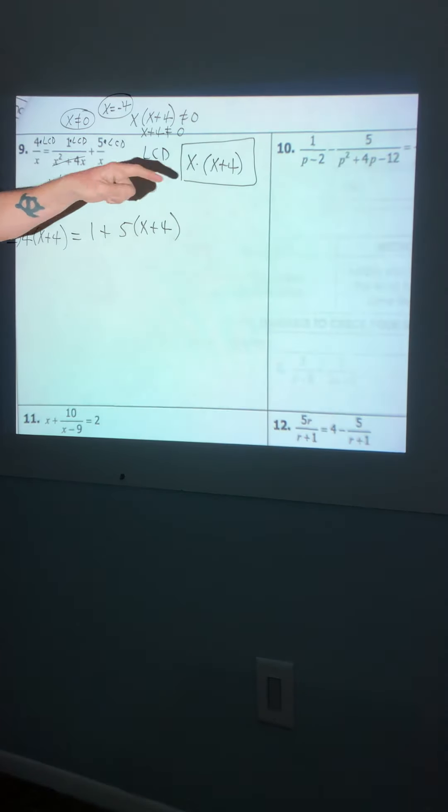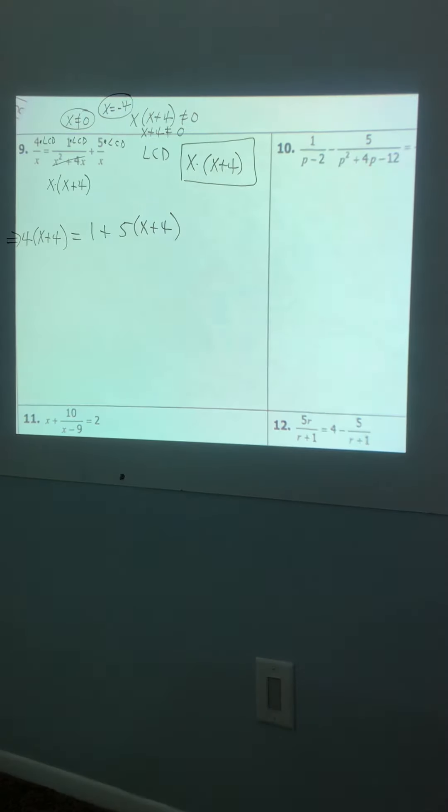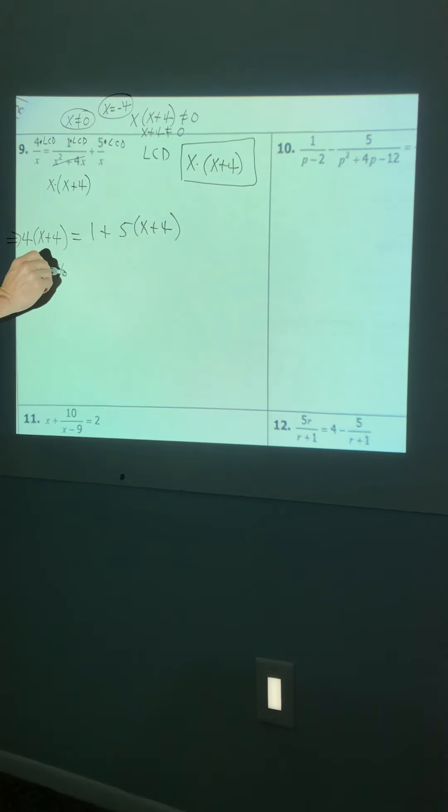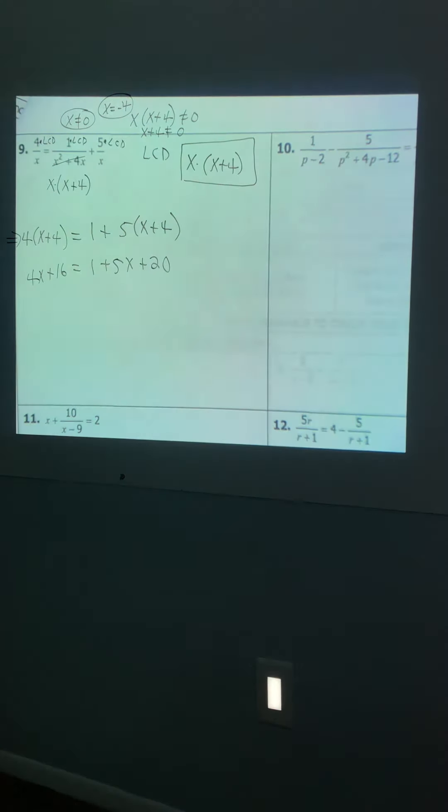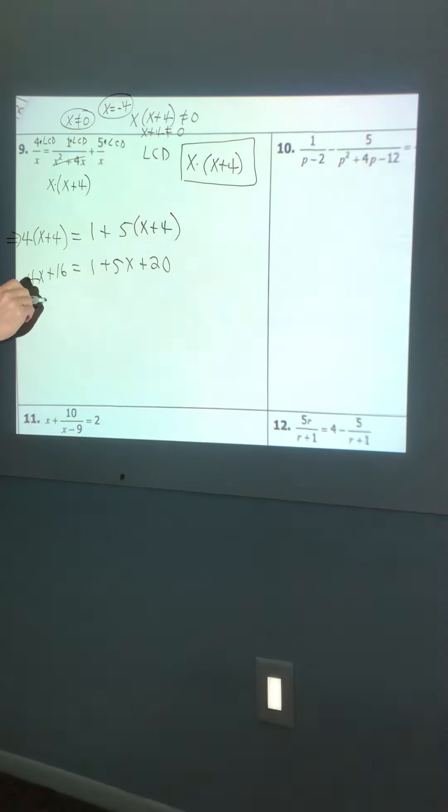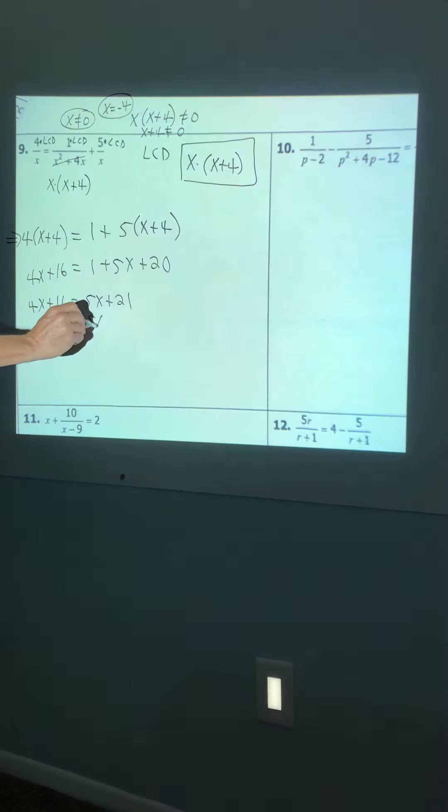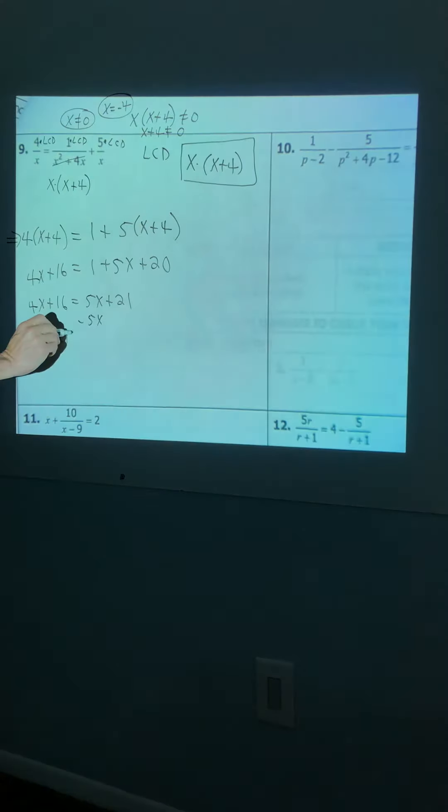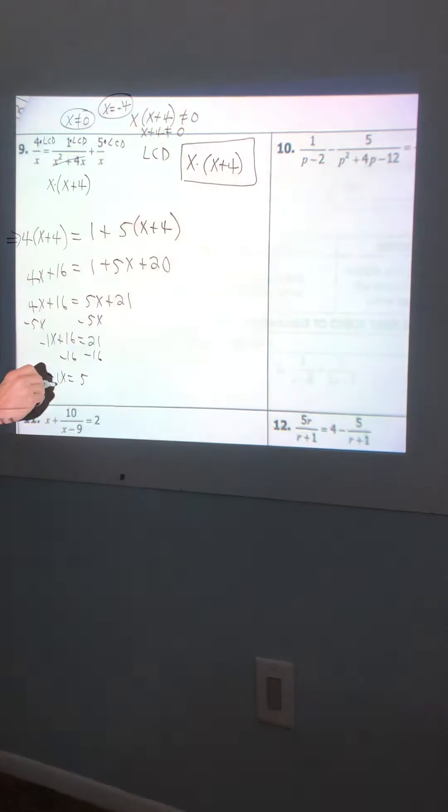If your LCD was correct, then you'll get an equation here with no fractions, and that is the name of the game. And now all I'm going to do is just distribute and finish. So we've got 4x plus 16 equals 1 plus 5x plus 20. You're going to get like terms together. We've got a 1 and a 20, so let me go ahead and combine that. And we get 5x plus 21. Subtract 5x. Subtract 5x. I get negative 1x plus 16 equals 21. Subtract 16. Subtract 16. Negative 1x equals 5. Divide by negative 1. And x is negative 5.